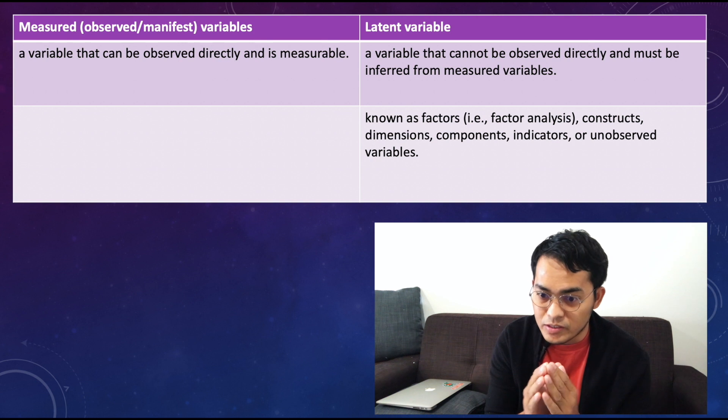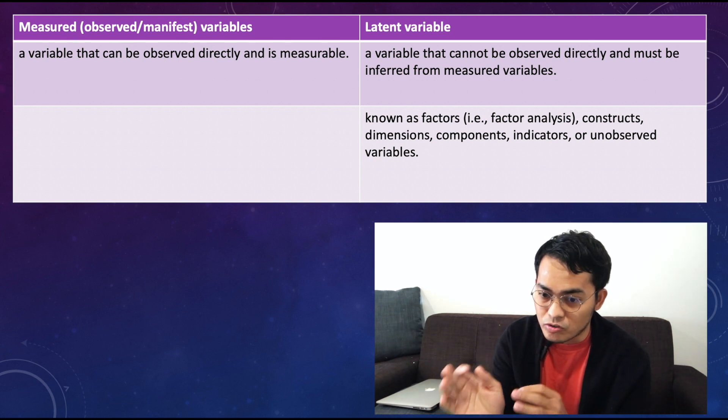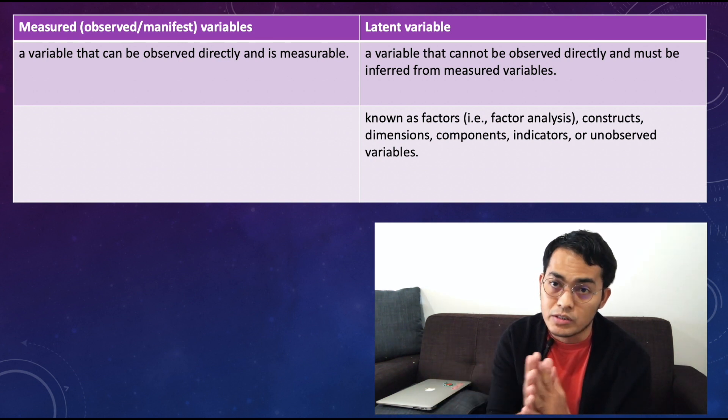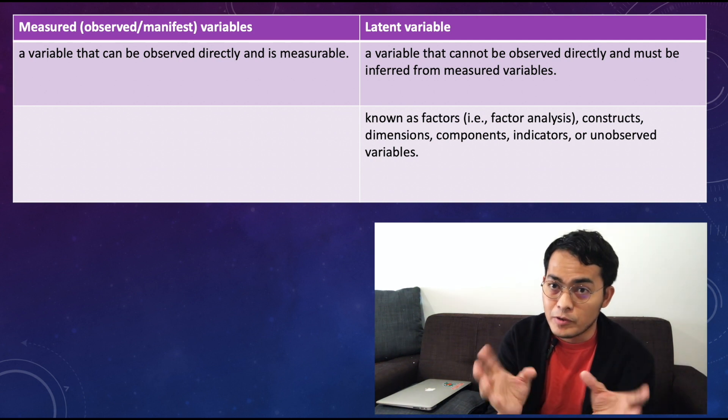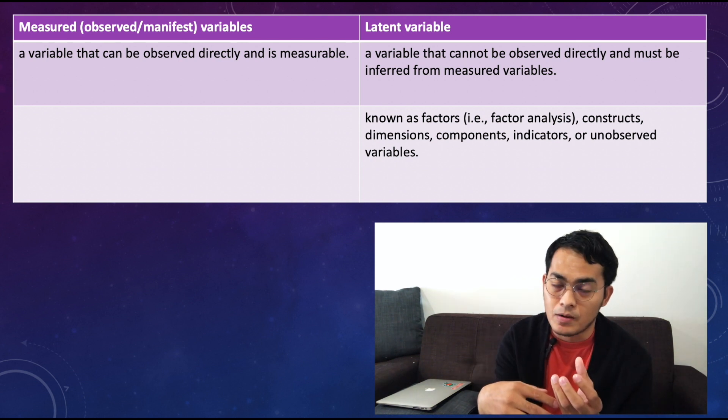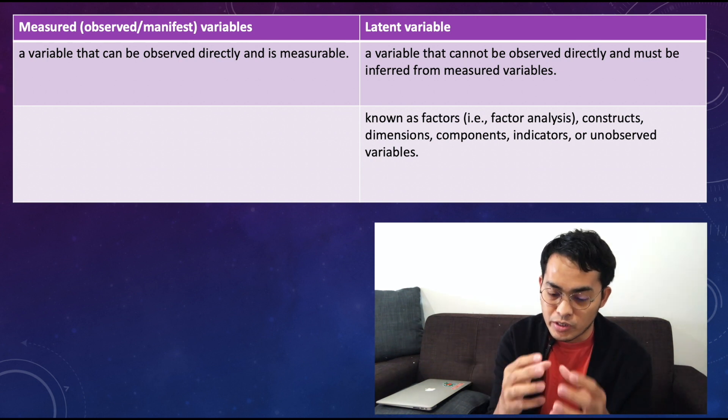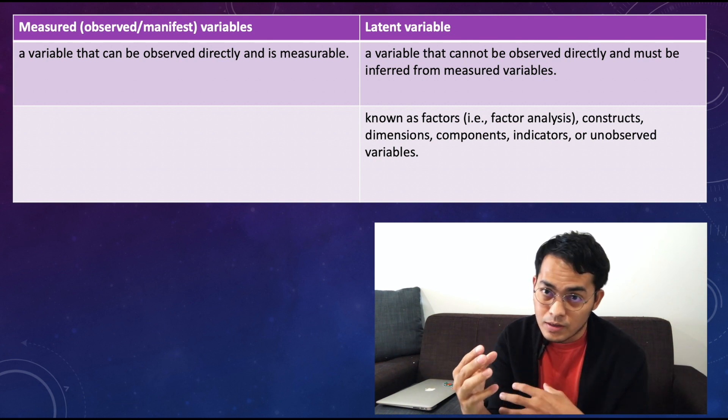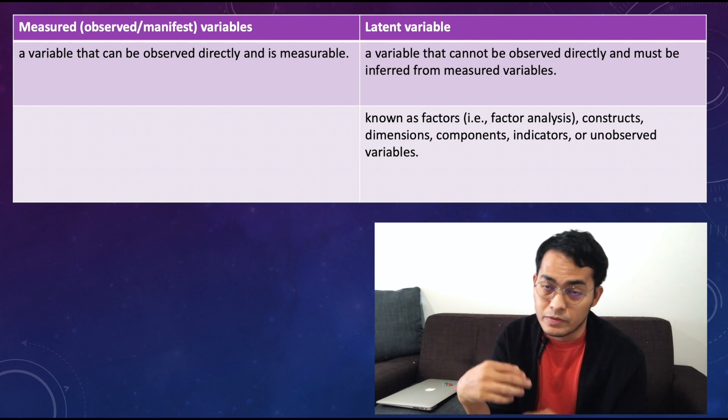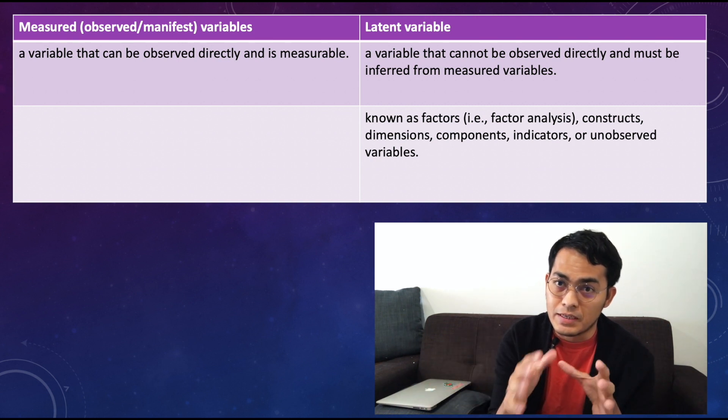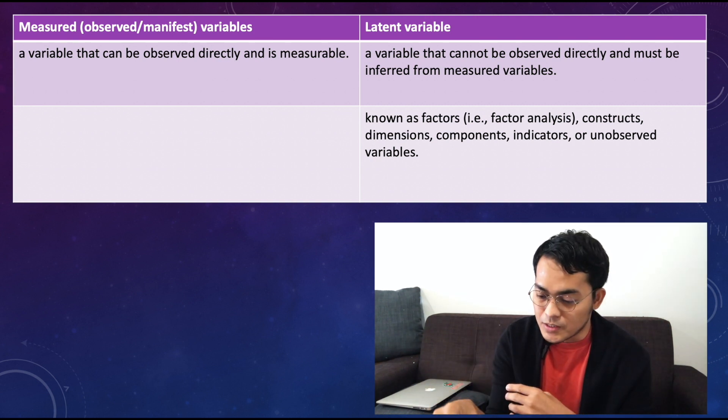Latent variables are known as factors (in factor analysis), constructs, dimensions, components, indicators, or unobserved variables. So latent variable is like a concept with so many dimensions. In order to measure the latent variables, you need to measure the dimension first or the measured variable first in order to measure the latent variables.